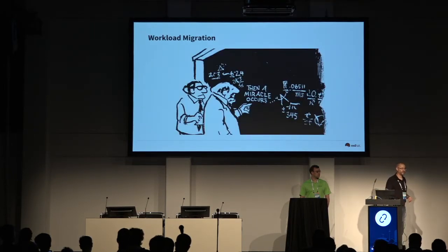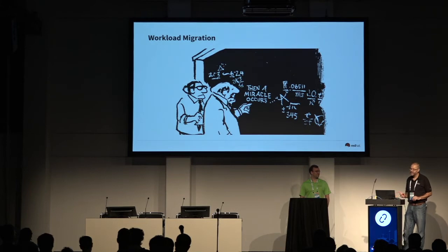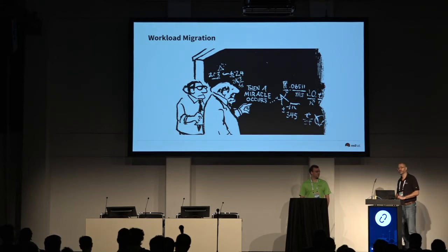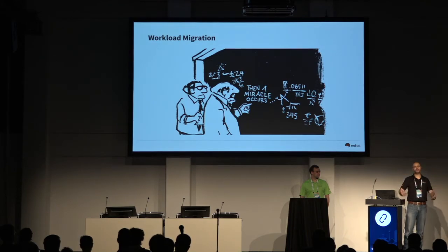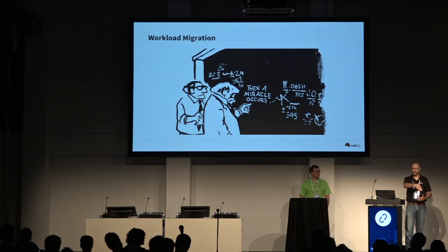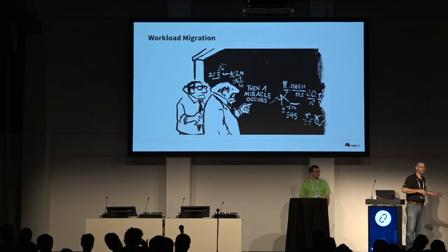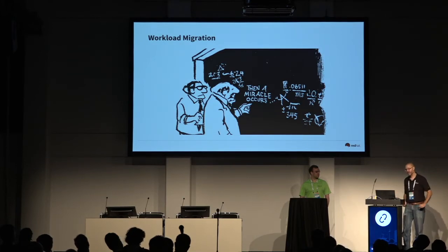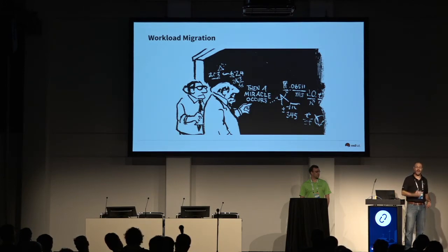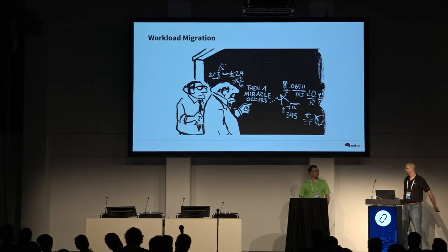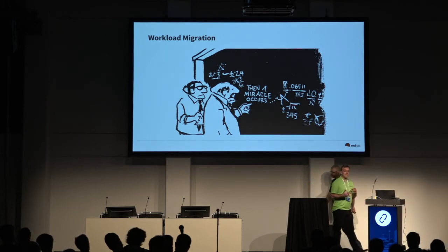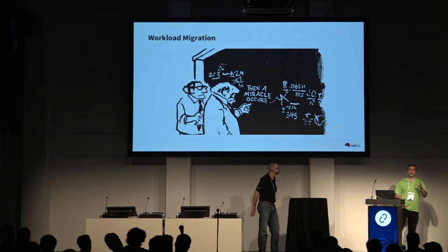About workload migration: from a Red Hat point of view we bring in consultants to figure out how to move a particular workload from one environment to another. This brings us full circle to the value of the Trilio toolset — their ability to take a workload out of one OpenStack environment and move it to another. And Trilio is the step two in this process.